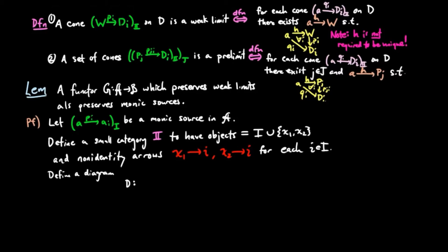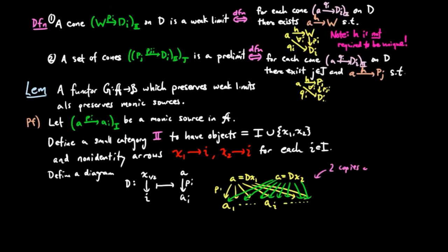Then we define the diagram D by sending one of these non-identity morphisms, X1 or 2 to I, to the morphism PI from A to AI. So the diagram takes the following shape in the category A.